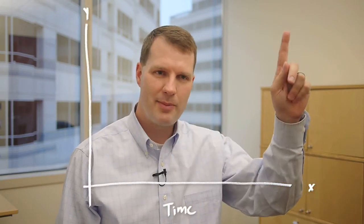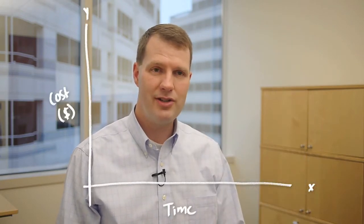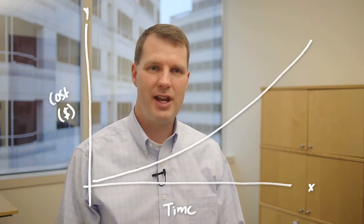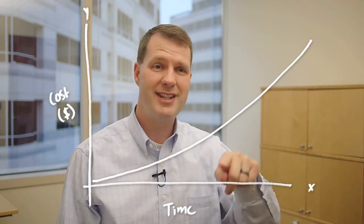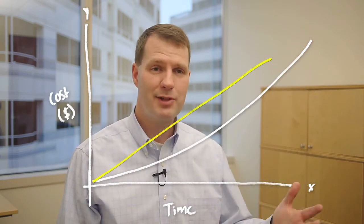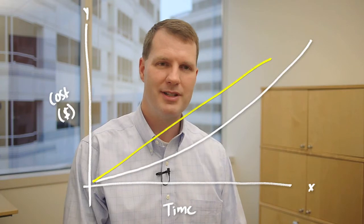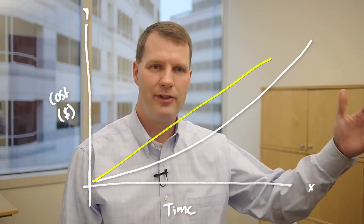The cost of change curve for software is how much it costs to change a piece of software — to add a feature or change a feature over time. If you think of an x-axis representing time and a y-axis representing how much it costs to change the piece of software, that's your cost of change curve. Many people assume that this curve is exponential, or at least steeply rising in a linear fashion — that it's much more expensive to make a change the further along you get in the life cycle of a project or a piece of software.